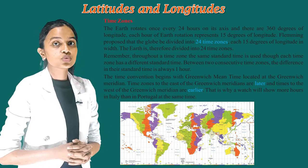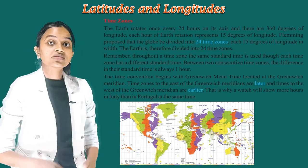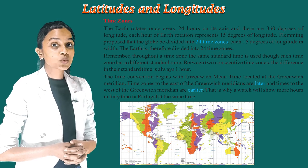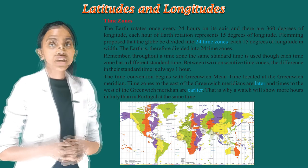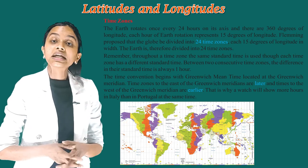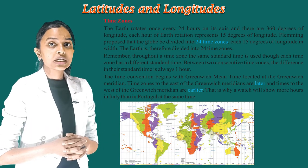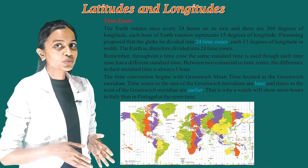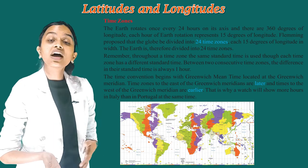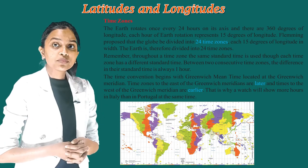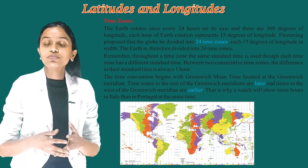Between two consecutive time zones, the difference in their standard time is always one hour. The time convention begins with Greenwich Mean Time, located at the Greenwich Meridian. Time zones to the east of the Greenwich Meridian are later, and times to the west are earlier. That is why a watch will show more hours in Italy than in Portugal at the same time.